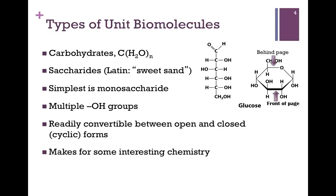and the cyclic, or closed form, on the right. The interconversion between linear and cyclic forms has to do with the presence of those hydroxyl groups and the reactive aldehyde group on the end. This makes for some rather interesting chemistry, as we'll see when we get to Chapter 11.